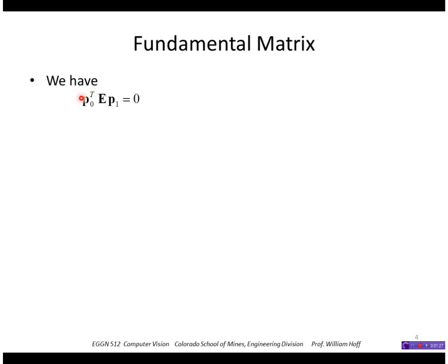To see how that works, let's start with the equation for the essential matrix as given here, and then write what P, the normalized image points, are in terms of the unnormalized image points. So P1 is just K inverse times U1. P0, I take the transpose of the product of K inverse times U0.